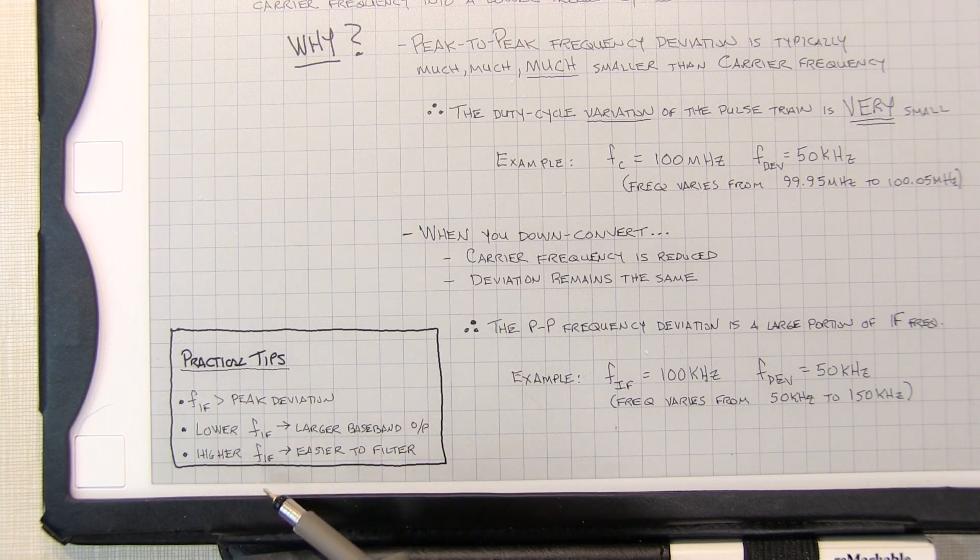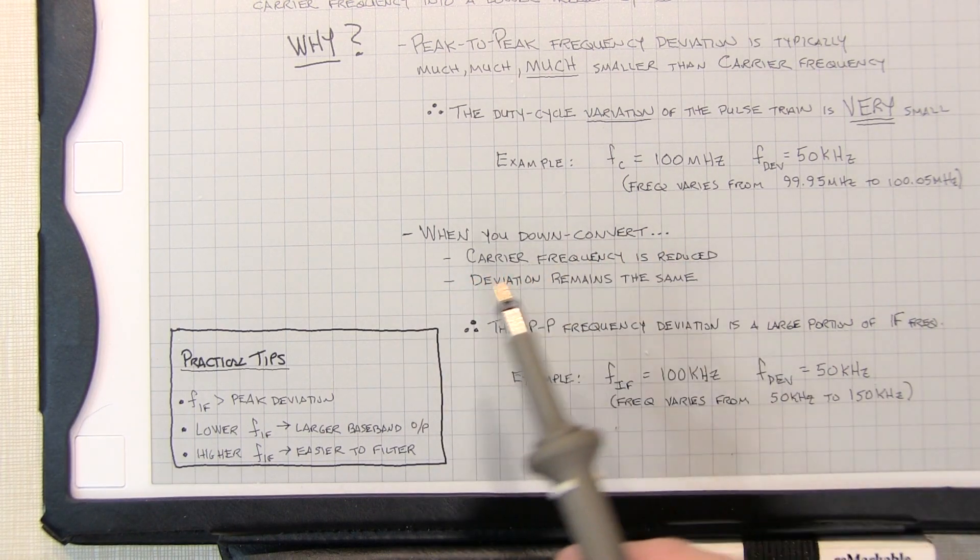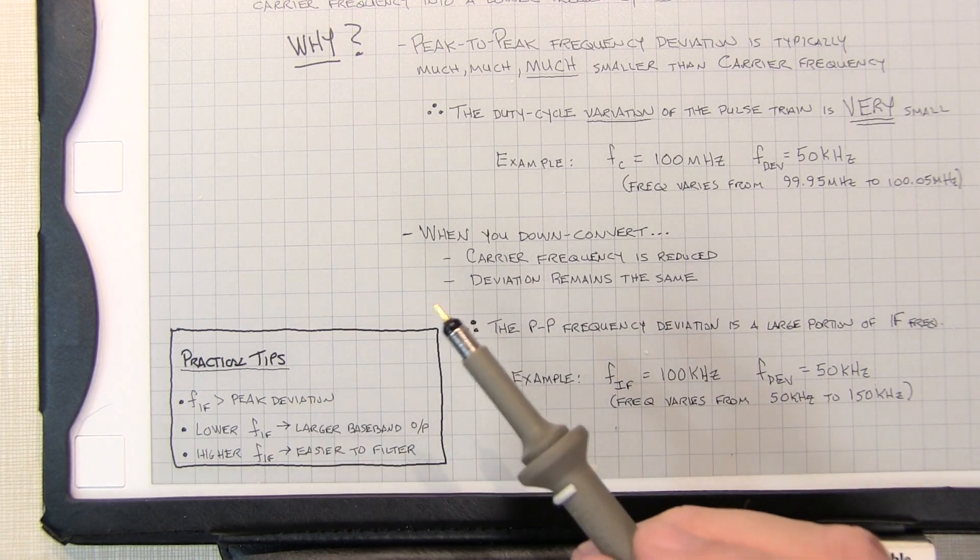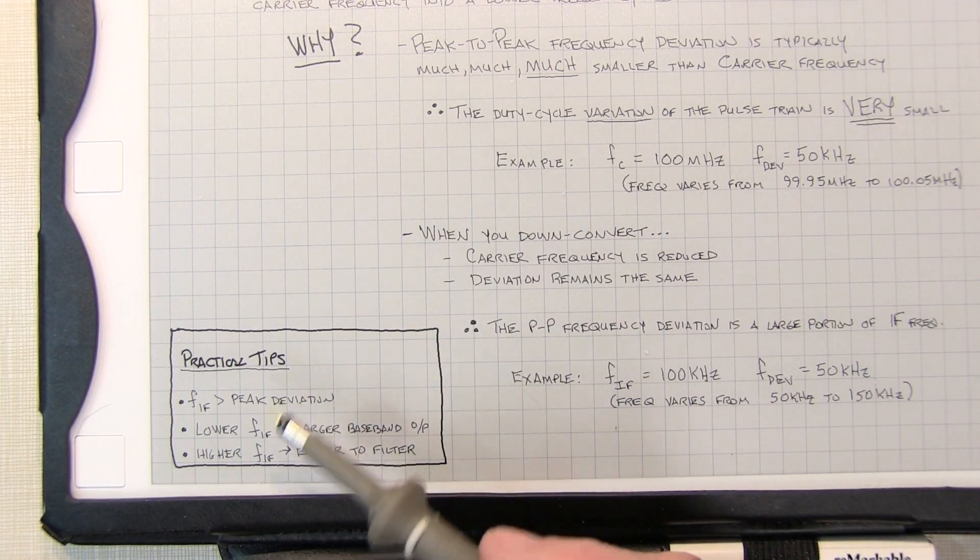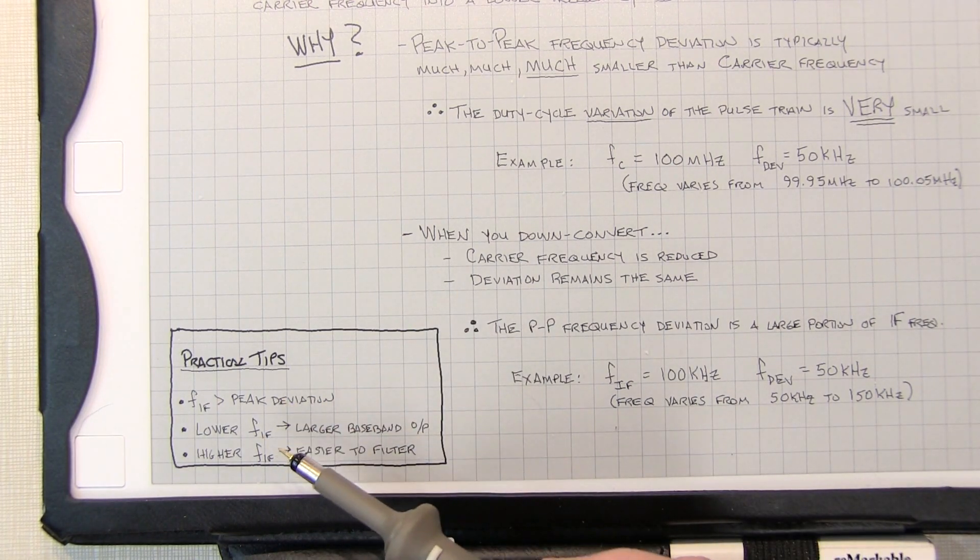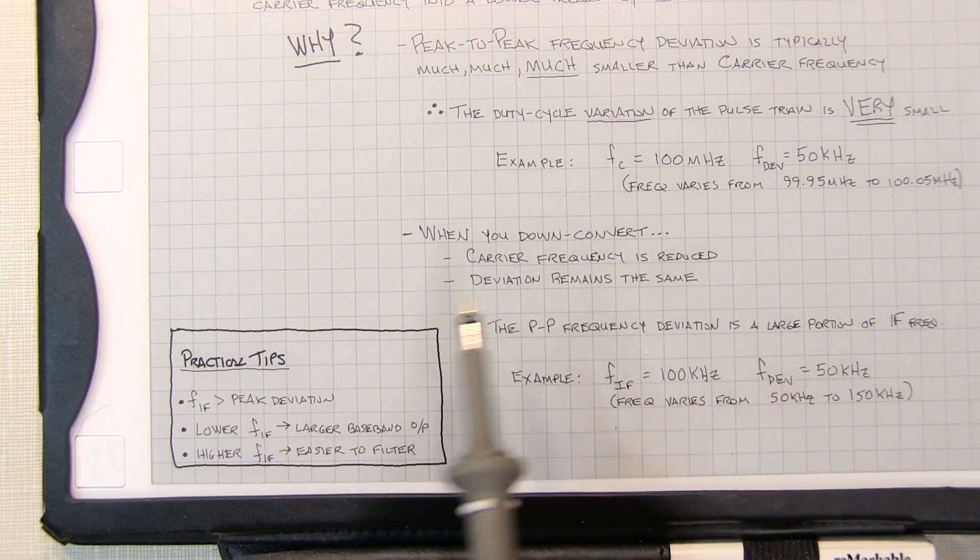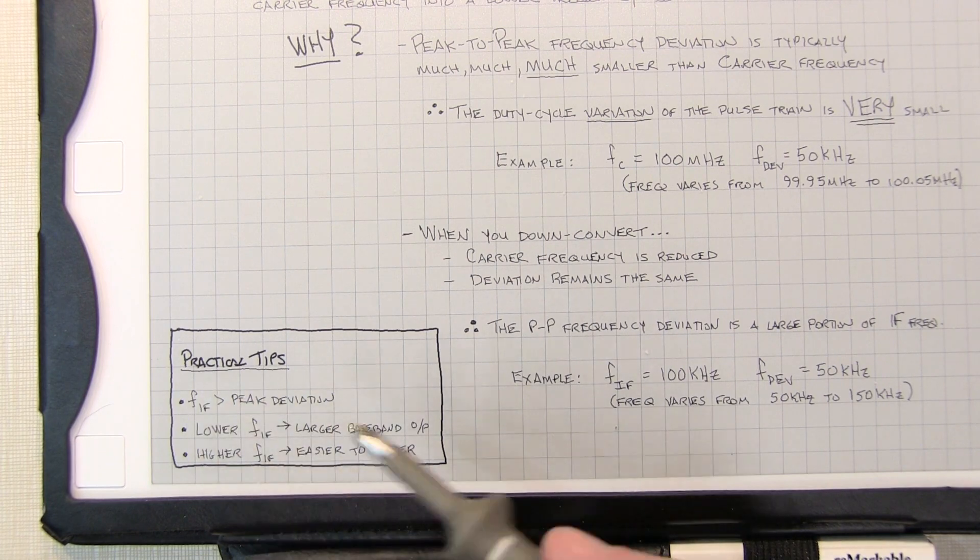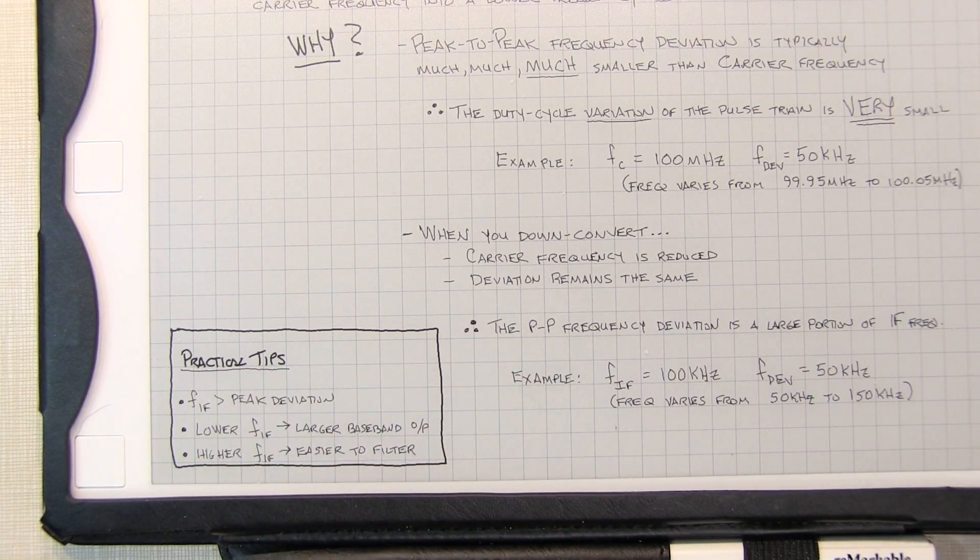The higher IF frequencies are easier to filter, right? It's easier to filter out something that's 500 kilohertz, a megahertz or something like that from an audio signal, but then you're going to get a smaller response. So there's always a trade-off between what the carrier frequency is or the IF frequency is versus your deviation. So this is just some practical tips when you go to design with one of these pulse counting demodulators.